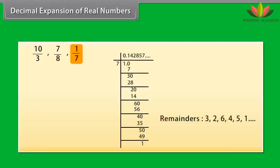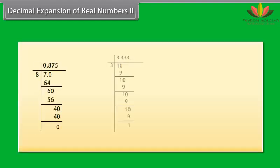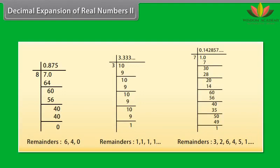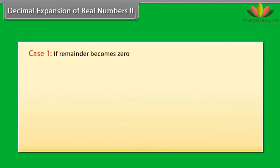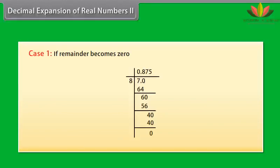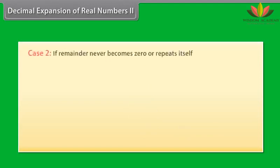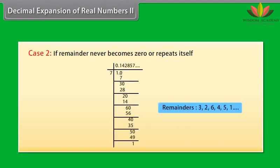Notice that in all these examples, the remainders either become 0 after a certain stage or start repeating. Case 1: if the remainder becomes 0, the decimal expansion ends after a finite number of steps — this is called a terminating decimal expansion. Case 2: if the remainder never becomes 0 but repeats itself, then the decimal expansion is non-terminating recurring.